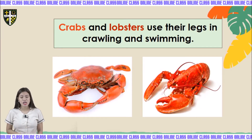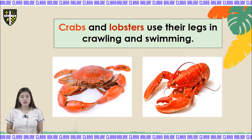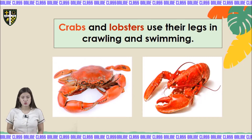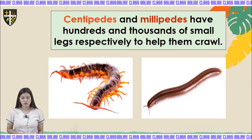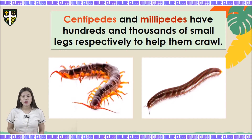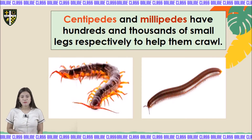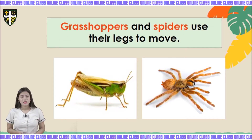Crabs and lobsters use their legs in crawling and in feeding, while centipedes and millipedes have hundreds and thousands of small legs respectively to help them crawl. Grasshoppers and spiders also use their legs to move.